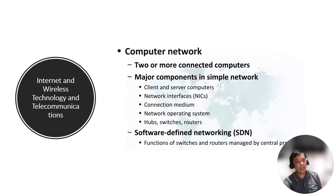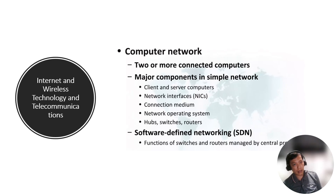Next is the computer network — it is two or more connected computers. The major components in simple networks are the following: client and server computers, network interfaces, connection medium, a router, network operating systems, hub switches and routers, and software-defined networking (SDN), where the functions of switches and routers are managed by a central program.